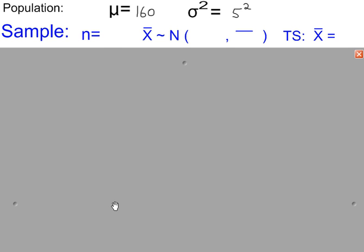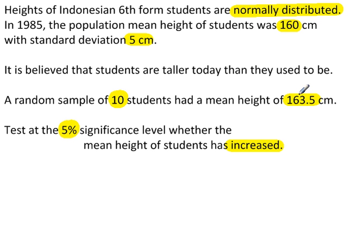So the population mean is 160. The standard deviation was 5, so the variance is 5 squared. The sample of 10 students was taken and the distribution of the sample mean is normal with mean 160, variance σ² over n, so 5 squared over 10. And the test value is 163.5.